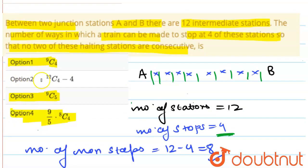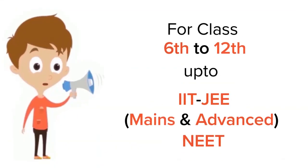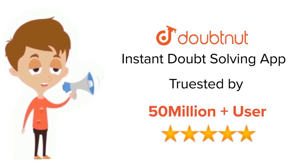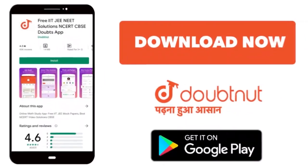And in the case of option number 2, your value for 12C4 is around 495. So option 2 cannot be correct. So option 1, 3 and 4 are your correct answer for this question. Thank you. For class 6 to 12, IIT and NEET level. Trusted by more than 5 crore students. Download Doubtnut app today.